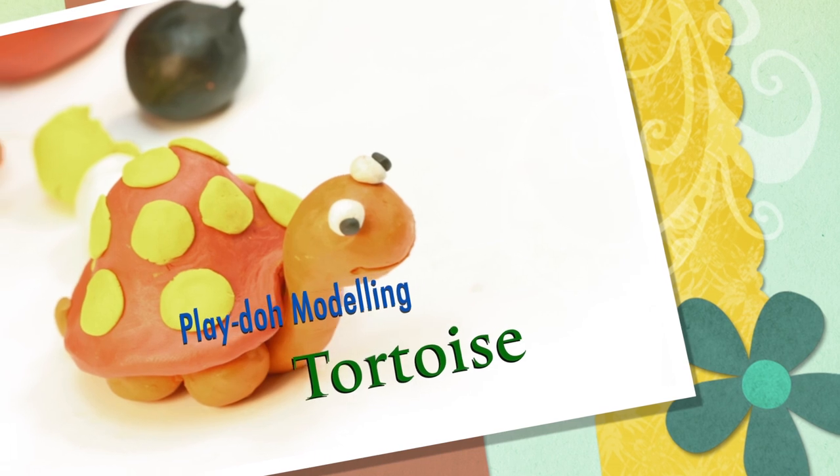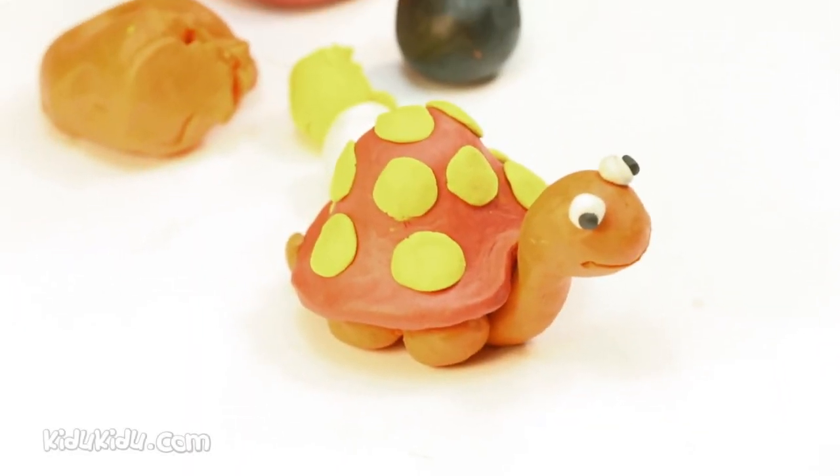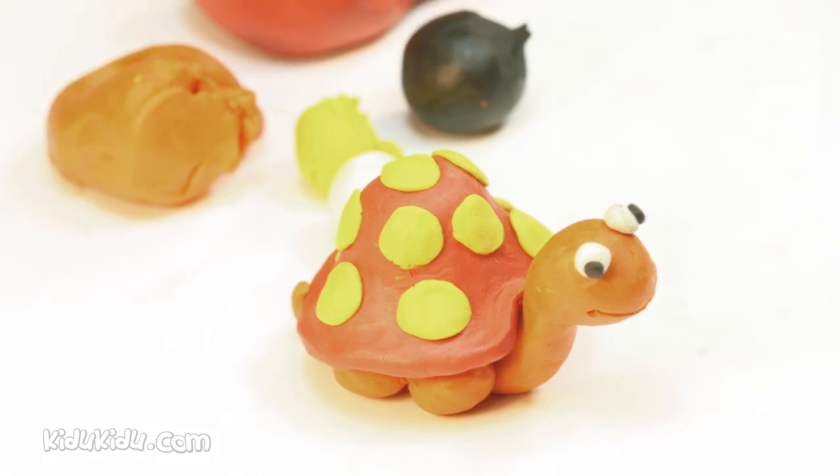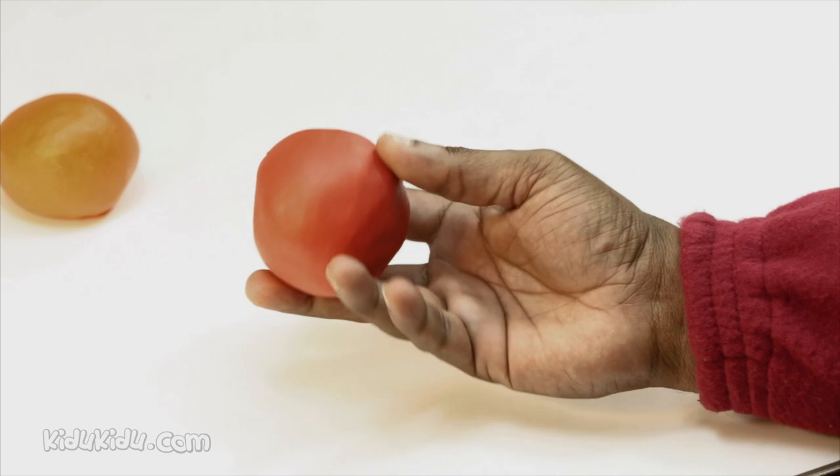Hello children, this is Show Bar. Today Uncle Sudhir is going to show us how to make a colorful tortoise. Fun, isn't it? Gather some balls of play-doh. We need a large brown ball, a red ball, and one small black, yellow, and white ball of play-doh.